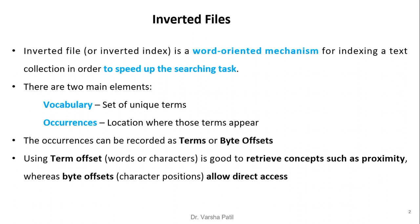Inverted file is a word-oriented mechanism for indexing a text collection in order to speed up the searching task. There are two main elements: vocabulary, that is the set of unique terms, and occurrences, that is the location where those terms appear.